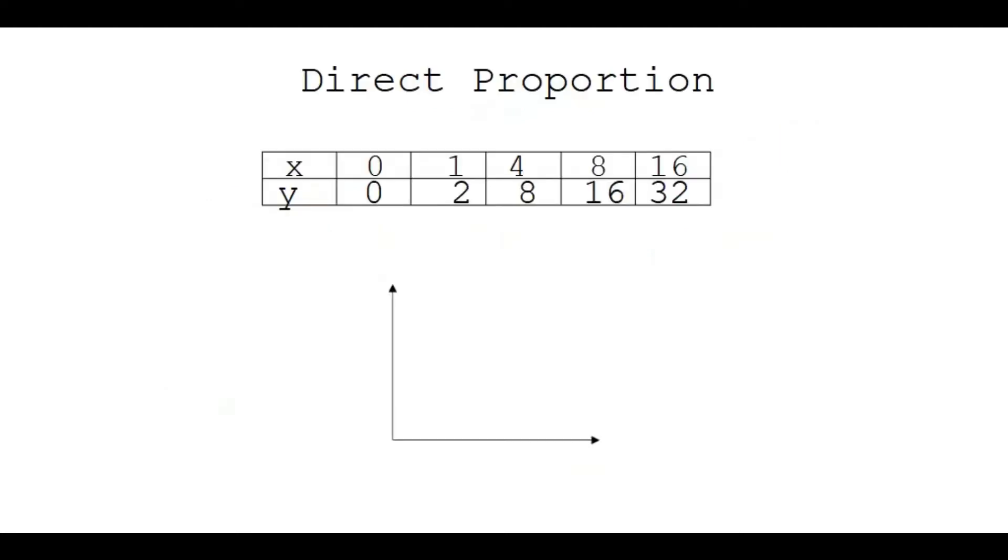I also want to show you something when it comes to this table. Because they use a table to sometimes explain direct and indirect proportion. So let's see. When it comes to direct proportion and you have a table, you will see that going from x to y, there's a simple thing that you can do. You just multiply by 2. Look at all the x's. 0 multiplied by 2 is still 0. 1 multiplied by 2 is 2. 4 multiplied by 2 is 8. And so forth.